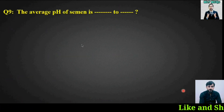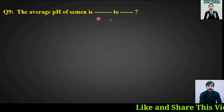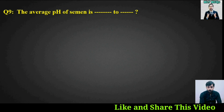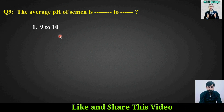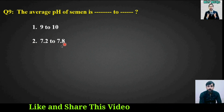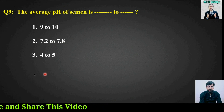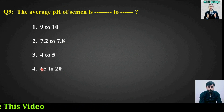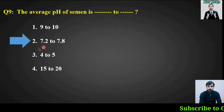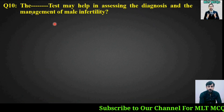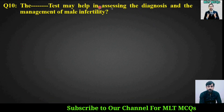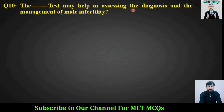MCQ number nine: The average pH of semen is how much? Options are: 9 to 10, 7.2 to 7.8, 4 to 5, or 15 to 20. The right answer is option number two — 7.2 to 7.8.